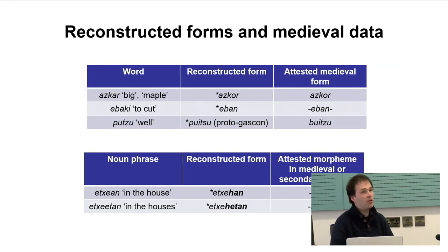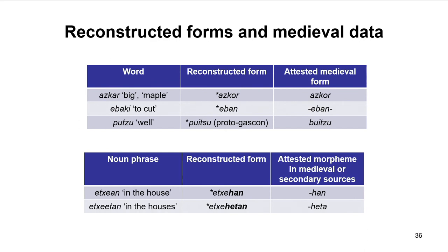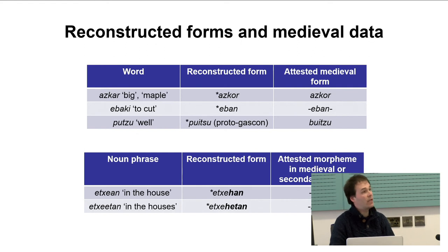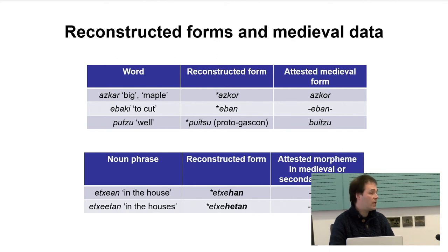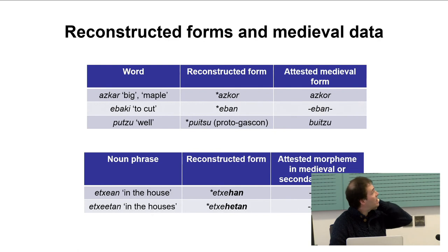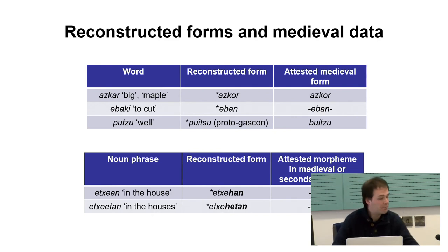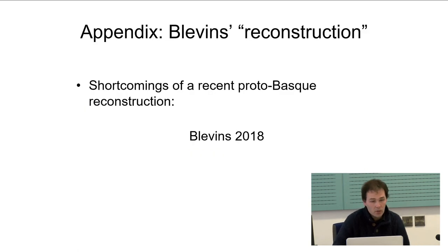Summarizing: I have shown a series of examples in which reconstructive work has proven to be correct thanks to recently discovered medieval data. For 'askar', we had the reconstructed form 'ascor', which is the one we actually found in medieval records. For 'evaki', Trask reconstructed a simpler form 'evan', which is the one we actually found in medieval data. And so on.